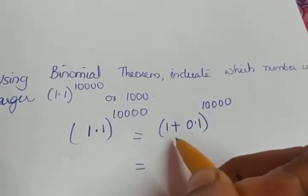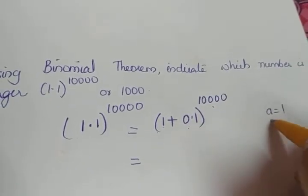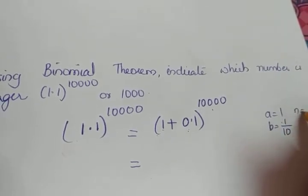Now this is of the form a plus b the whole raised to n, where a is equal to 1, b is equal to 0.1 or 1 by 10, and n is equal to 10,000.